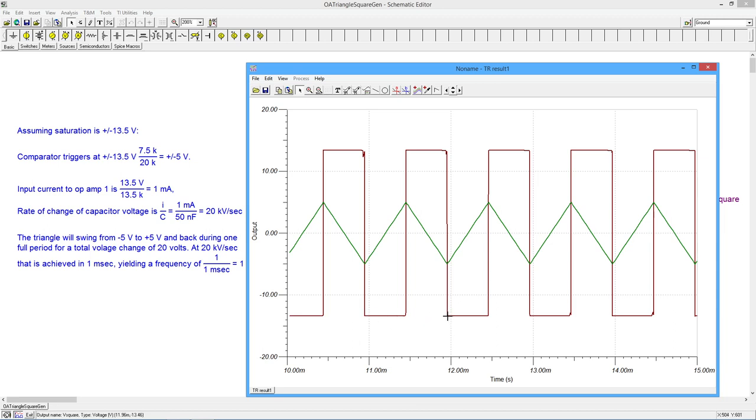Here's the transition from here to here to there, it's just about a millisecond consistently. So yes, we are in fact getting 1 kilohertz. So that's a fairly simple kind of circuit to generate both squares and triangles.